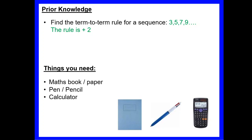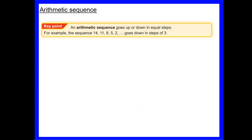You should be able to find the term-to-term rule for a sequence. For example, in the sequence 3, 5, 7, 9, the rule is add two, or plus two, as we add two to each number to get to the next. For this lesson you'll need your maths book or paper, a pen or pencil, and a calculator if you want one handy.